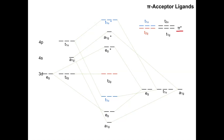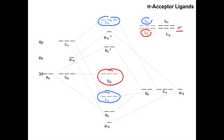Now we can see which orbitals have the same symmetry. We have a T1u orbital among the pi star LGOs, and we already have T1u's on our MO diagram, so those will form bonding and antibonding interactions. Most importantly, we have a set of T2g pi star orbitals. So far T2g has been non-bonding — that set will now form a bonding and antibonding interaction. The T1g and T2u sets have no matching metal orbitals, so they stay non-bonding.